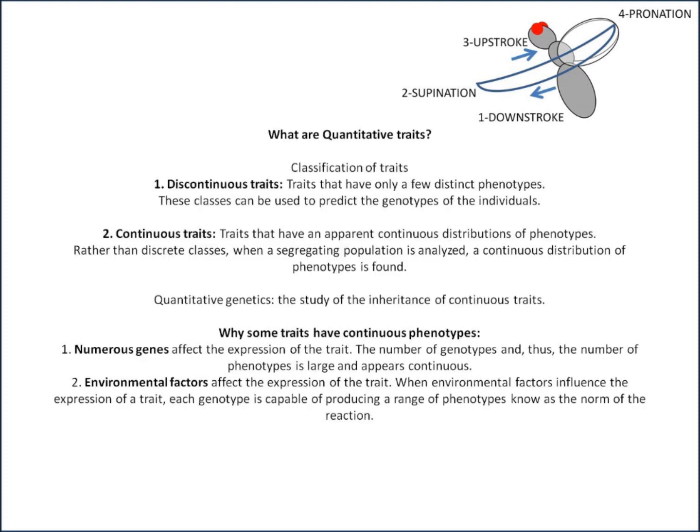There are two classifications of traits. First, discontinuous traits — traits that only have a few distinct phenotypes; that's your classic Mendelian transmission. These classes can be used to predict the genotypes of individuals. For example, if we cross a tall and a short pea plant and look at the F1 plants, we know the genotype of the short plants and can give a generalised genotype for the tall plants. Furthermore, if we know the genotype, then we can predict the phenotype of the plant.